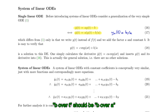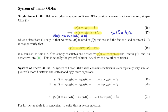A more general solution is given here: c times exponential of at, plus b over a. It is easy to verify that this is a solution simply by calculating the derivative and inserting it into the differential equation. We see that b/a cancels out and we have c·a·e^(at) on both sides. So we have verified the solution.